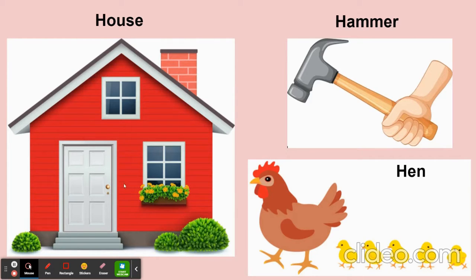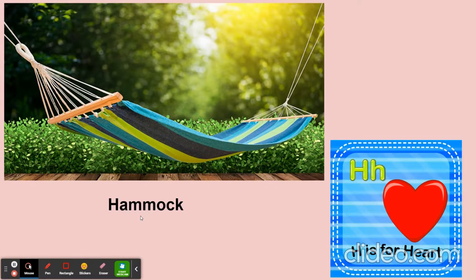Where we stay, we stay in a house — H for house. H for hammer. H for hen — and these are the chicks. This is a hammock — a hammock is a type of swing. When we go on a holiday or to the beach, we can nicely relax and enjoy ourselves in a hammock. H for heart. So these are a few words for letter H.